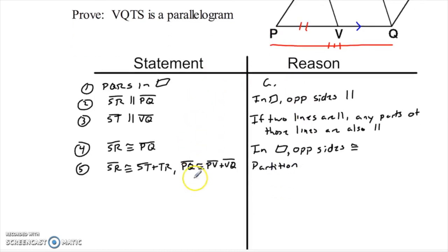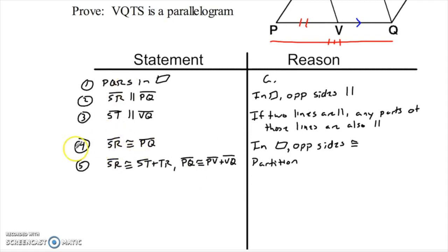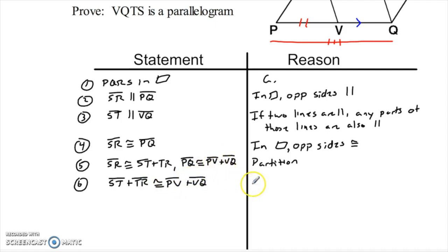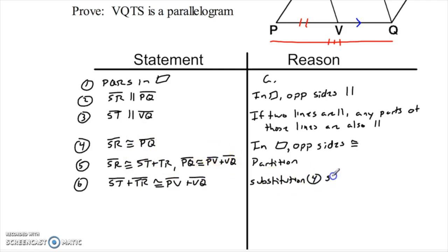Now, why did I do that partition? So I could take these large pieces and substitute. In the next step I get to say: ST plus TR is congruent to PV plus VQ. That is a substitution with those previous steps — I'm replacing SR with ST plus TR and PQ with PV plus VQ.